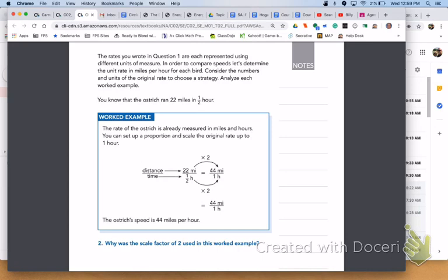Please turn to page 63. The rates you wrote in question 1 are each represented using different units of measure. In order to compare speeds, let's determine the unit rate in miles per hour for each bird. Consider the numbers and units of the original rate to choose a strategy. Analyze each worked example.